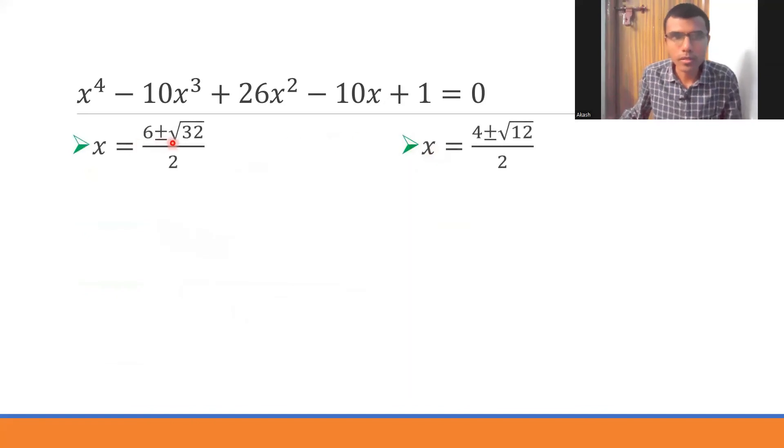Okay, now observe 32 and 12 are not perfect squares. They are not perfect squares. So it's a given that our answer will have some irrational problem. But we can simplify it a little.